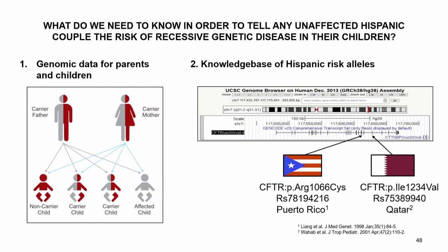If you're doing genetic screening based on an array, you need the mutations already known and genotyped on that array. For example, if a man from Puerto Rico meets an Arab woman in Qatar, comes to the U.S., and they get carrier screening, the mutations on the screening panel are the ones observed in the U.S. including Puerto Rico, but not those observed in Qatar. You would get a false negative for the mother, and potentially have a child affected with cystic fibrosis.